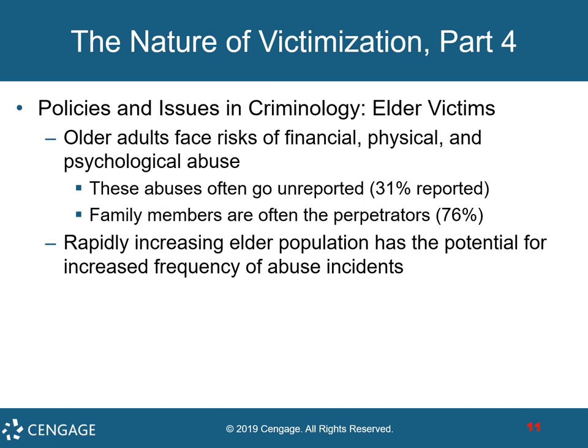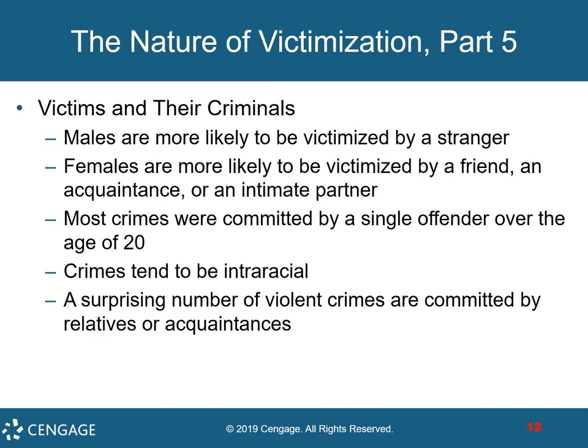When it comes to elderly victims, older adults face risks of financial, physical, and psychological abuse. These abuses often go unreported — as much as 31% of the time — and family members are often the perpetrators, 76% of the time. A rapidly increasing elderly population in the United States has the potential for increased frequency of abuse incidents. When it comes to victims and their criminals, most crimes are committed by a single offender over the age of 20. Crimes tend to be interracial, and a surprising number of violent crimes are committed not just by acquaintances but by relatives themselves.